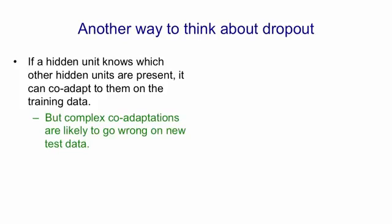And these are likely to go wrong when there's a change in the data. So on new test data, if you're relying on a complex co-adaptation to get things right on the training data, it's quite likely to not work nearly so well on new test data.